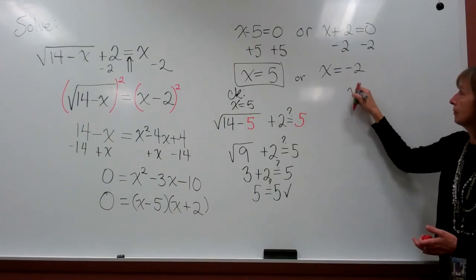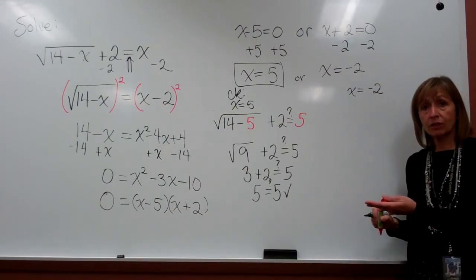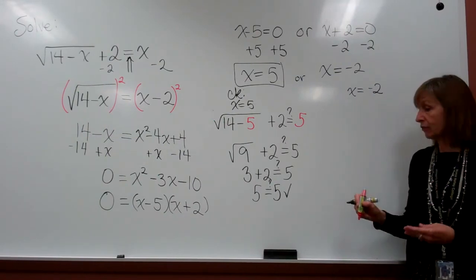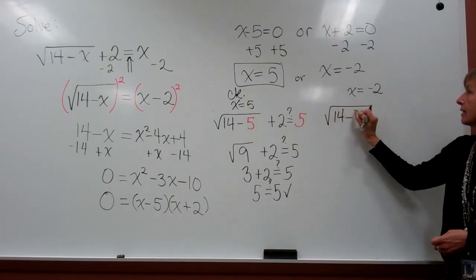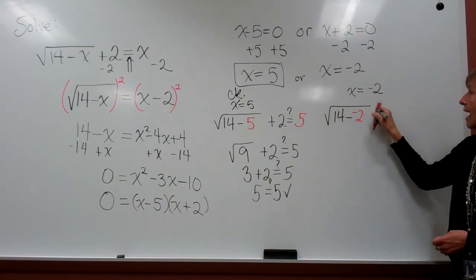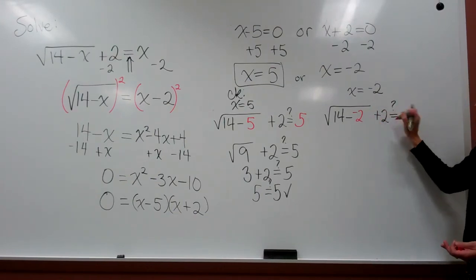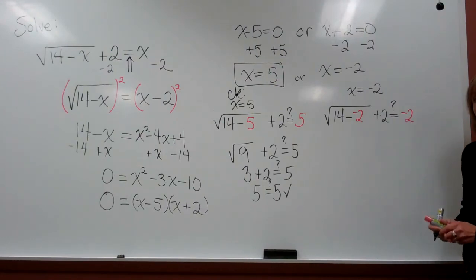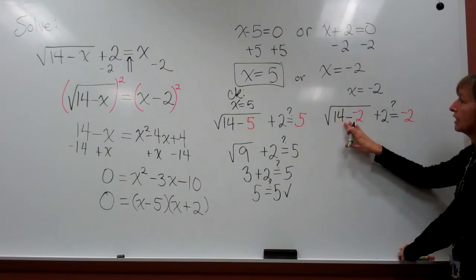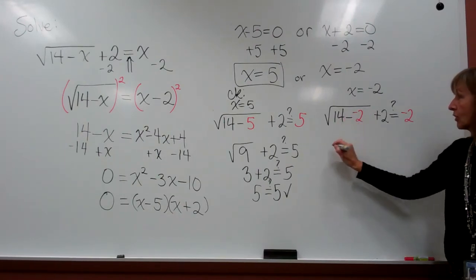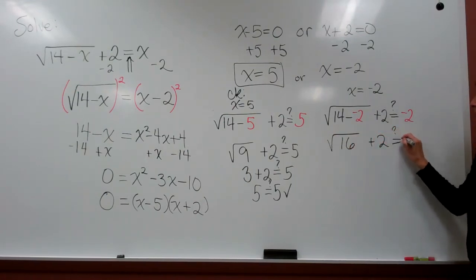But we also need to check the other possible solution, our x equals negative 2. We're going to go back to the original equation, this time take out the x's and put negative 2 in instead. So, we have the square root of 14 minus our negative 2, and then after that, plus 2. Does that come out to be the same as negative 2? Simplifying this, we have under the square root, 14 minus a negative 2, so that's 14 plus 2. We have the square root of 16 plus 2. Does that come out to be negative 2?